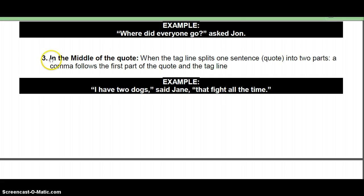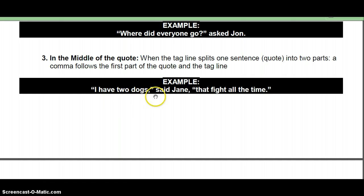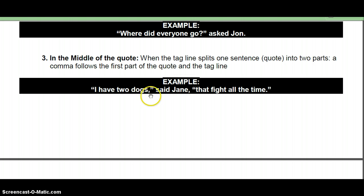Last but not least, if the tagline is in the middle of the quote — when the tagline splits one sentence or quote into two parts — a comma follows the first part of the quote and then the tagline. So here we see: "I have two dogs," said Jane, "that fight all the time." Basically Jane said, "I have two dogs that fight all the time." When writing this, the comma goes right after the first part of the quote, then the tagline, then another comma, then the rest of the quote.